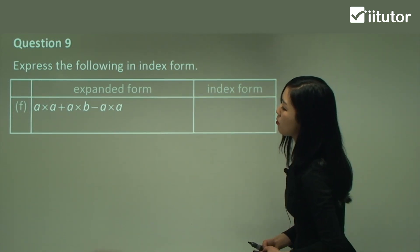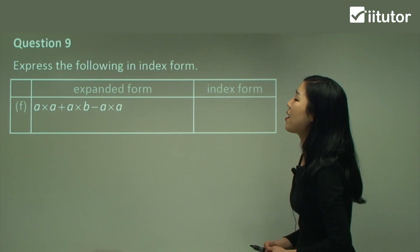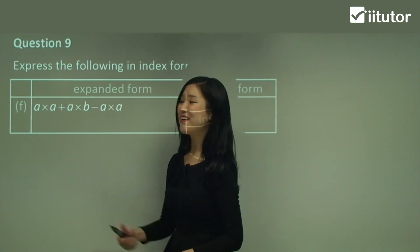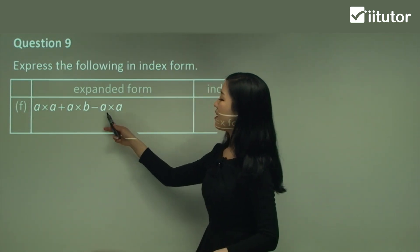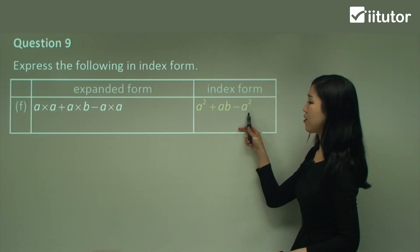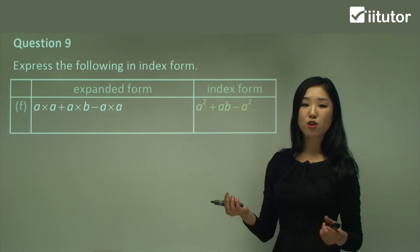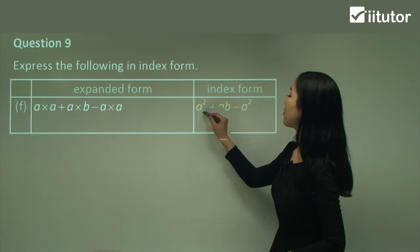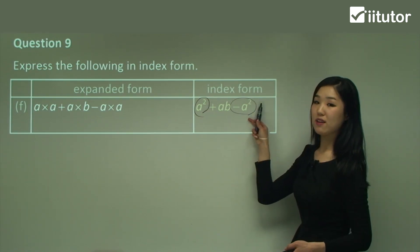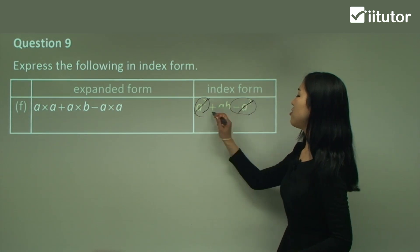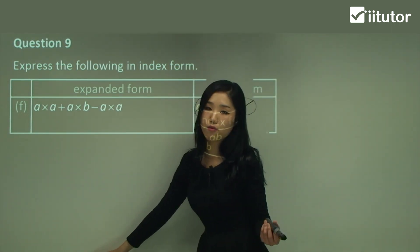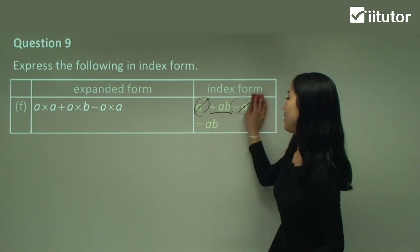For part f: a times a plus a times b minus a times a. We've got two a's, then a and b, then two a's again. Remember — gather like terms if you have any. See how a squared and a squared are like terms? So a squared minus a squared equals zero. We eliminate those, and we're just left with ab. When it says express something in index form, make sure you leave it in the simplest form.